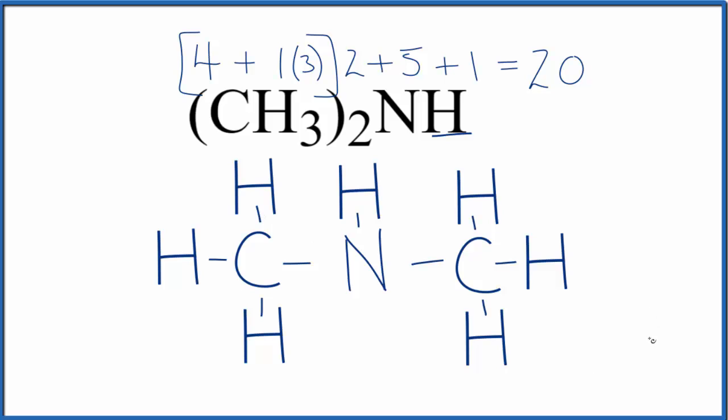Carbon will bond to four things. So each carbon here has an octet. The central nitrogen has one, two, three - it has six valence electrons.